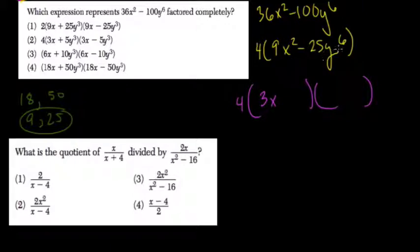And then over here, we have 25y to the sixth, so the square root of that is 5y to the third, right? 5y³.